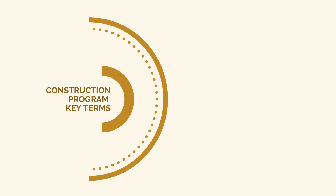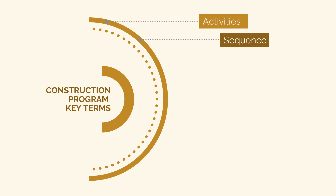We've got a full course on construction project scheduling that goes into these terms in more detail, but the basic concepts we need to understand about construction programs are: activities — the list of all the project activities to be completed to deliver the contract scope; sequence — activities ordered into the logical sequence they need to be completed in; and milestone — any key point or date that has to be met, such as completion of a separable portion.